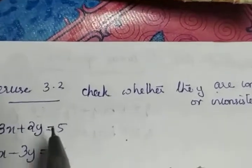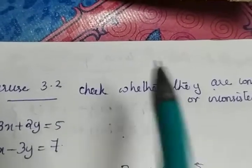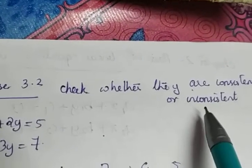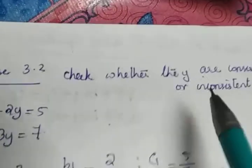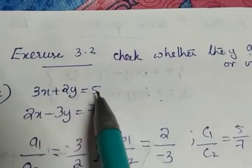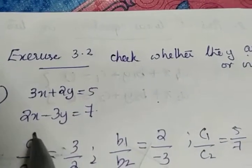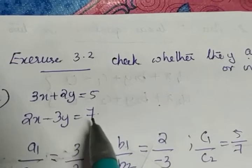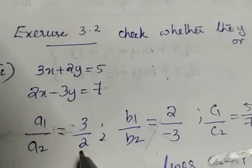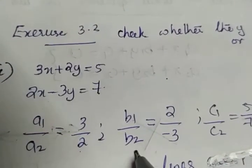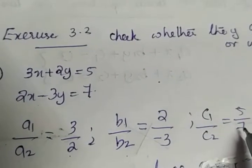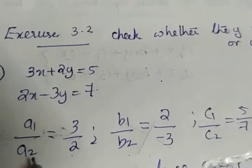The next is the third question of exercise 3.2 to check whether the given system is consistent or inconsistent. The first pair is given as 3x plus 2y is equal to 5 and 2x minus 3y is equal to 7. So I took the ratio a1 by a2 as 3 by 2, b1 by b2 as minus 2 by 3, and c1 by c2 as 5 by 7.